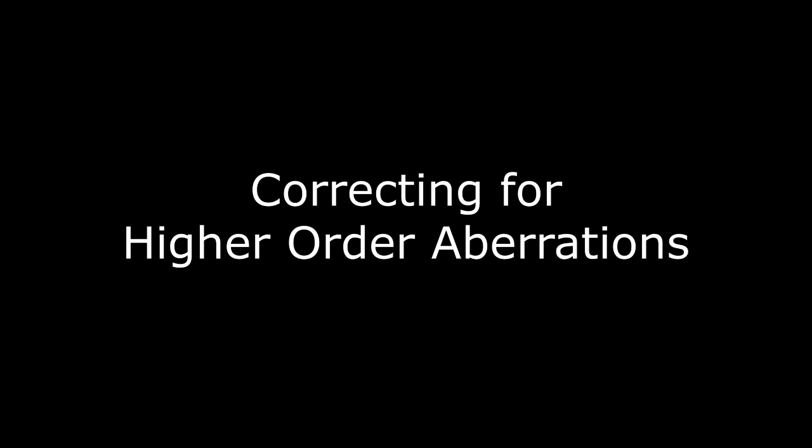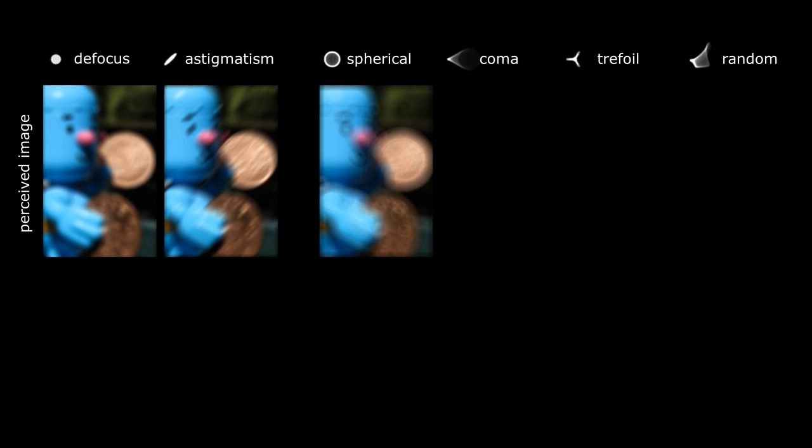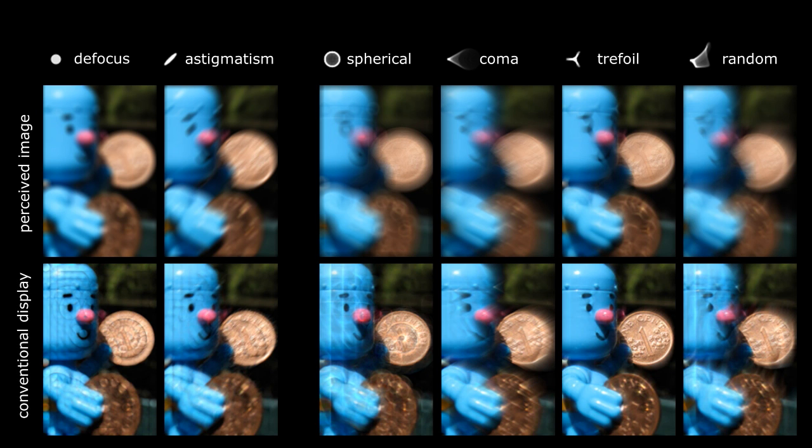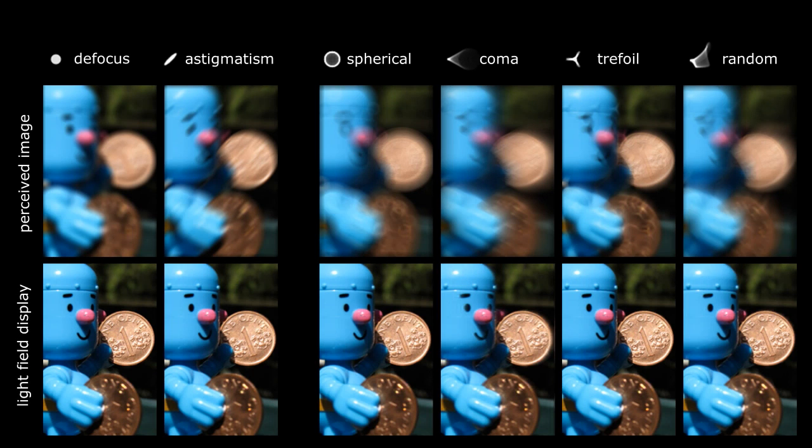Finally, we are also able to correct higher order aberrations. Unlike defocus, higher order aberrations have non-circular point spread functions. Interestingly, a few of them, such as trefoil, can be corrected with conventional displays, but most cannot. Our method successfully corrects all such aberrations.